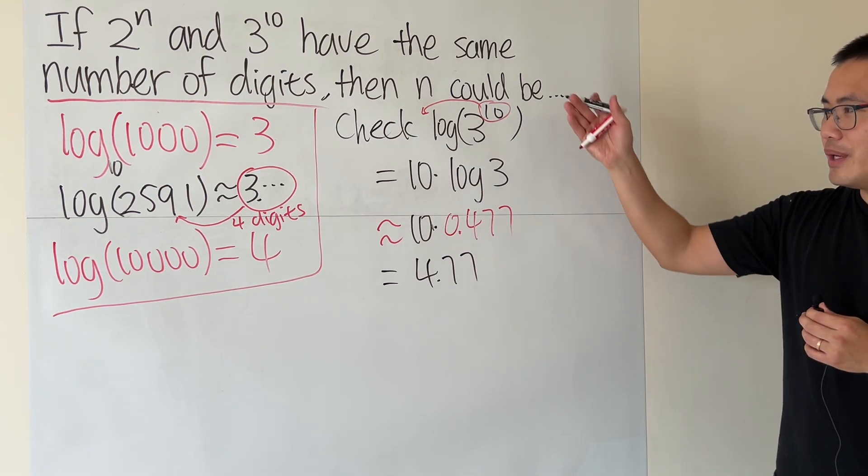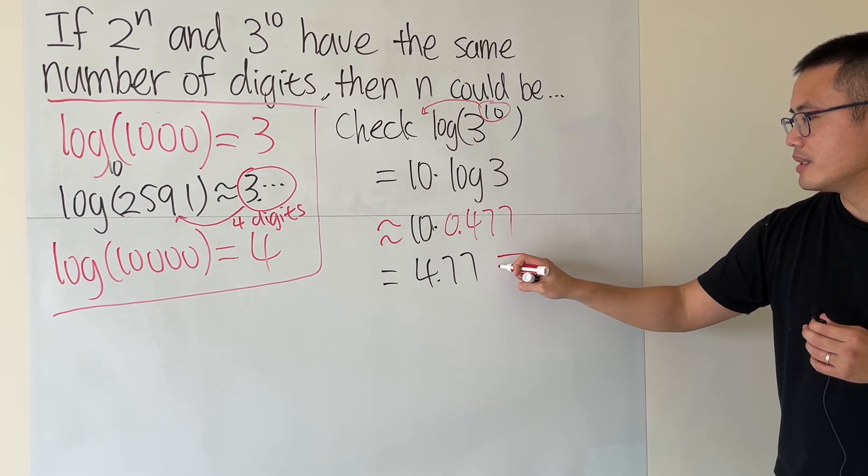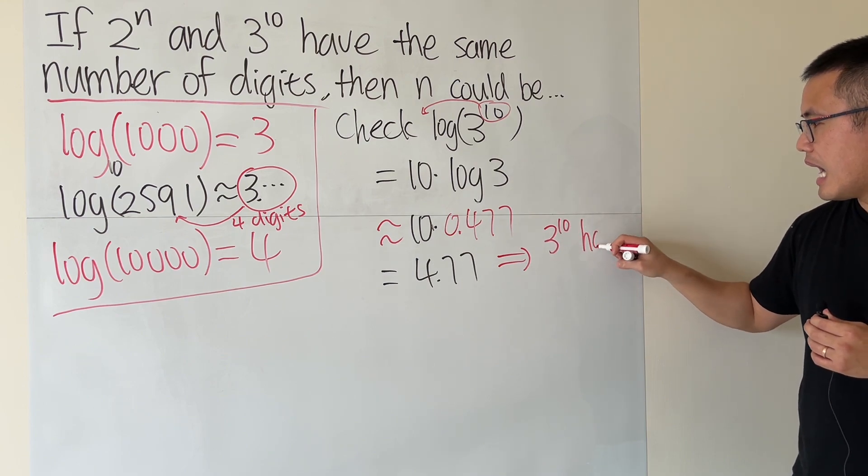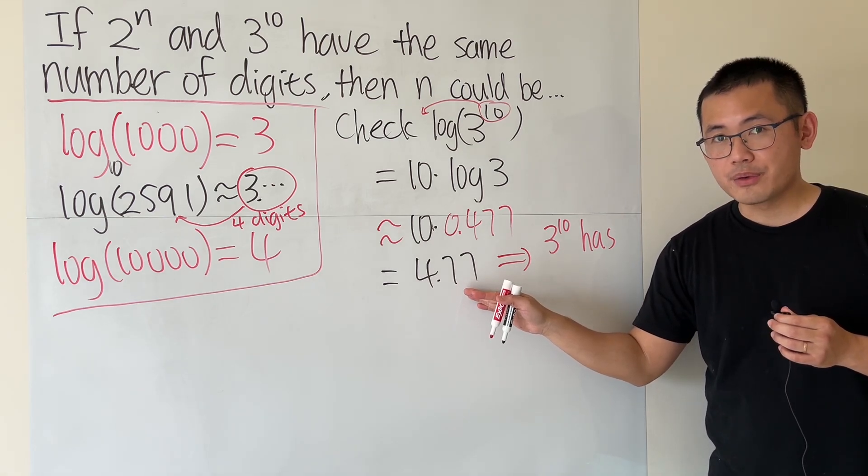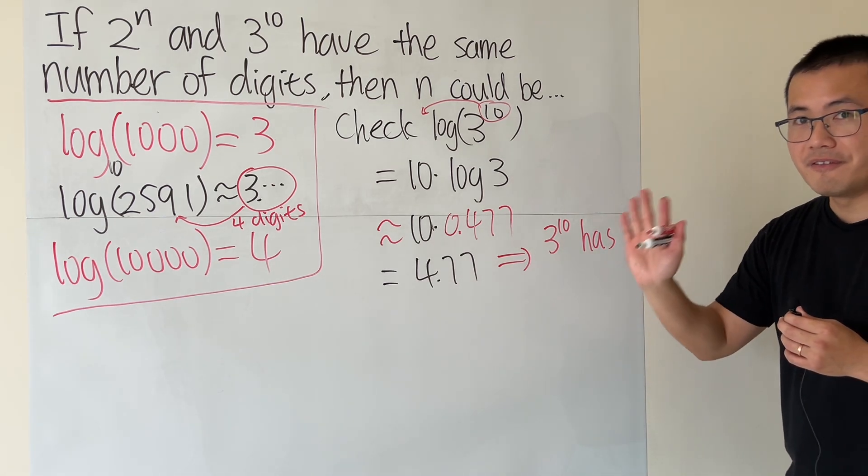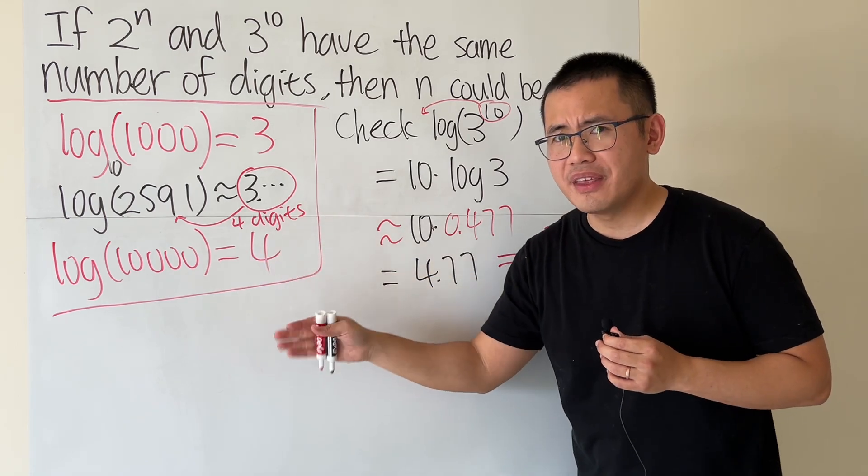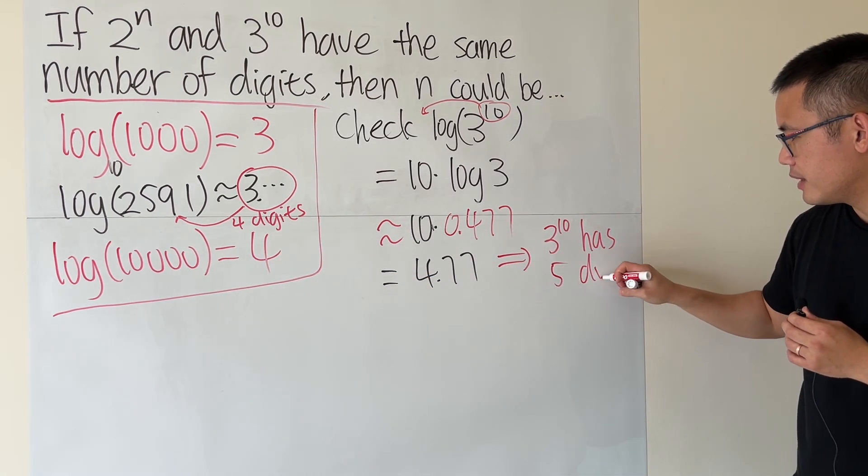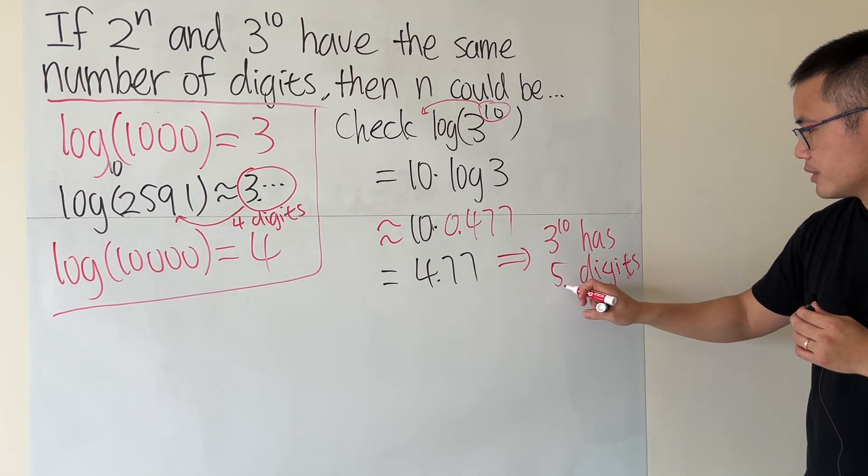But anyway though, this right here tells us what? This right here tells us 3^10 has how many digits? It's 4 point something, right? So you must have 5 digits. Again, if it's 4 and 4 point something, we have 5 digits. So 5 is 5 digits. So the key right here is 5.